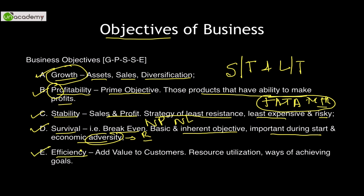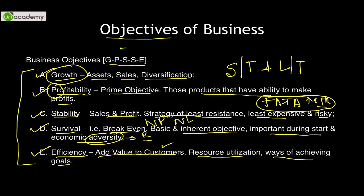And lastly, efficiency — very, very important. Needed for a business as well as for people in our daily lives; it adds value to everyone including customers. One should always maintain their efficiency. Utilize your resources to the fullest capacity — that is the only way to achieve efficiency and in turn your goals. The way these objectives are arranged, they come out in the mnemonic GPS+E: G for growth, P for profitability, S for stability, S for survival, and E for efficiency.